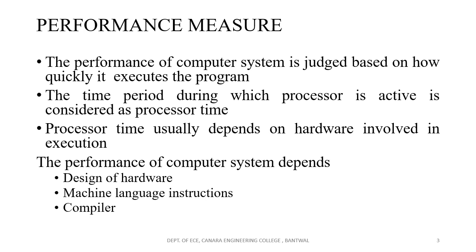The performance of a computer system is judged based on how quickly it executes the program. For example, in our previous lecture we considered taking input from a keyboard, processing it, and printing it using a printer. In that case, performance depends not only on the processor but also on the speed of the printer and the response from the input device. The total time required to execute an instruction is called the elapsed time, whereas the time during which the processor is active is called the processor time.